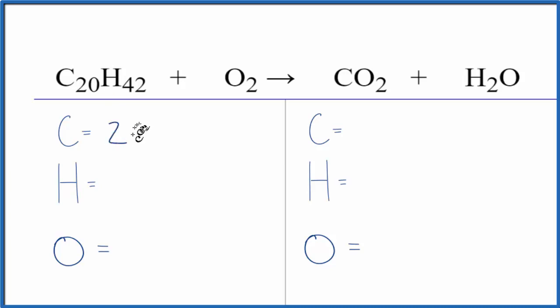Let's count the atoms up on both sides of the equation. We have 20 carbons, 42 hydrogens, and two oxygen atoms. On the product side we have one carbon, two hydrogens, two oxygens, plus one oxygen with the water, so three total.